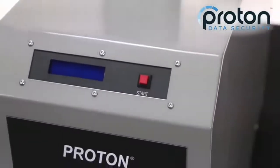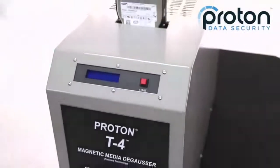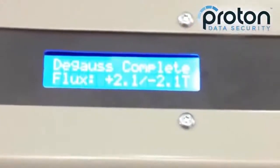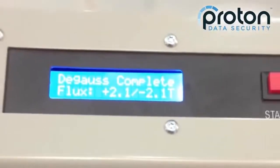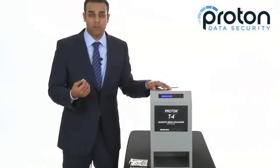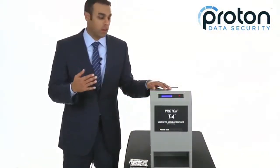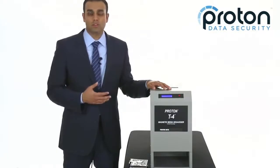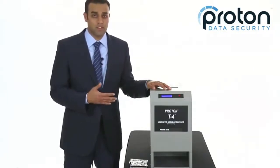As an added safeguard, the T4 has internal sensors, which measures the field strength of each and every cycle and reports it to the operator on this blue LCD screen. It'll report both the positive and negative pulses so you see the bi-directional field, and this ensures that your degausser is working to NSA specs each and every cycle.